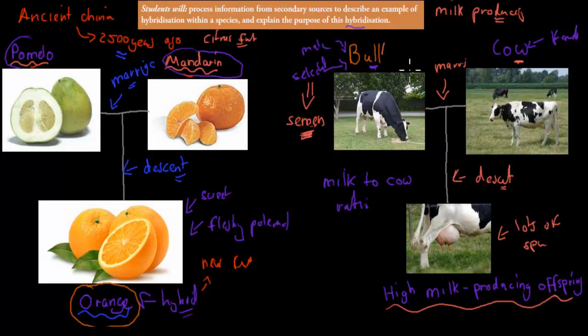So I go over the dot point again. It says students will process information from secondary sources to describe an example of hybridization of the species. The description was just the pomelo and the mandarin being crossed producing the orange that happened in ancient China 2,500 years ago. That would be the description.